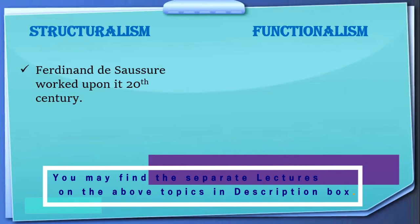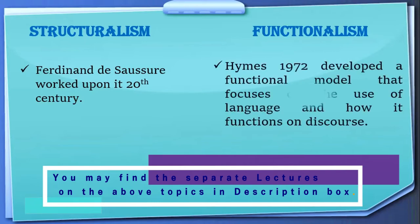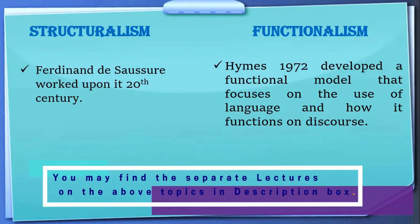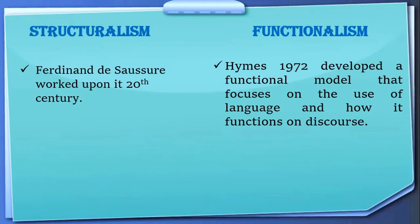Number one: structuralism — Ferdinand de Saussure worked upon it in the 20th century. On the other hand, when we talk about functionalism, Hymes in 1972 developed a functional model that focuses on the use of language and how it functions in discourse.